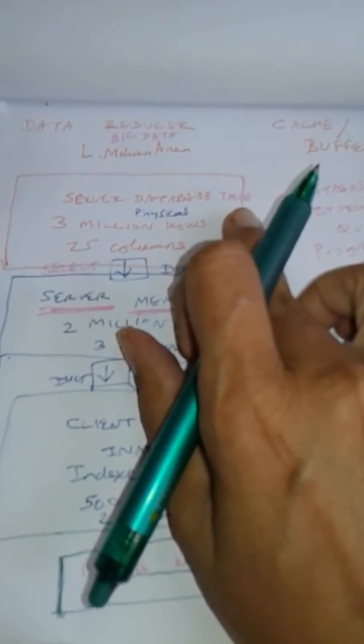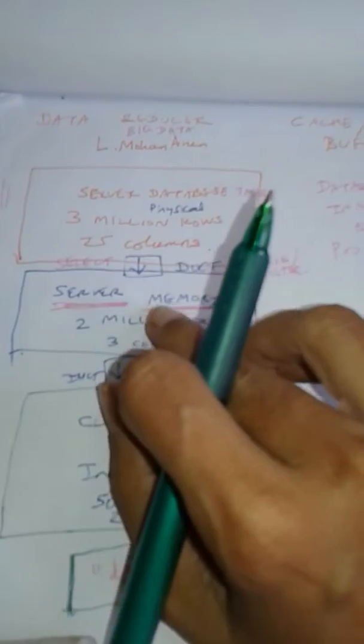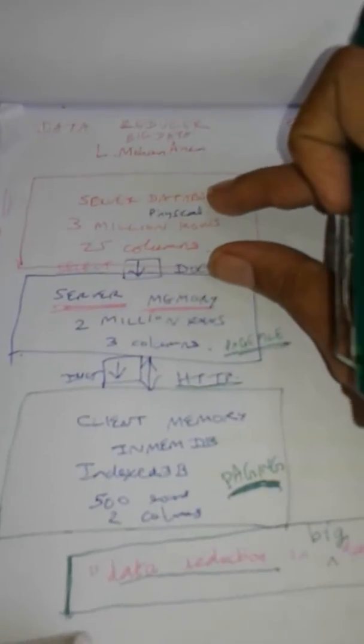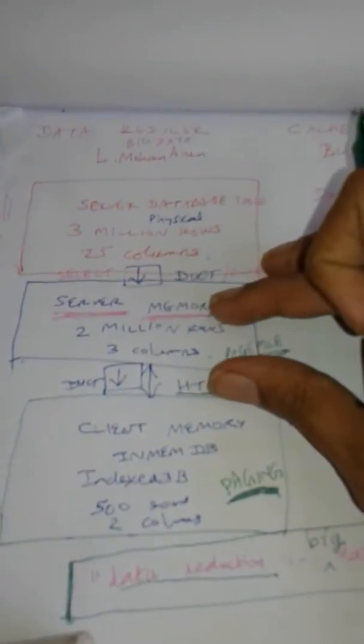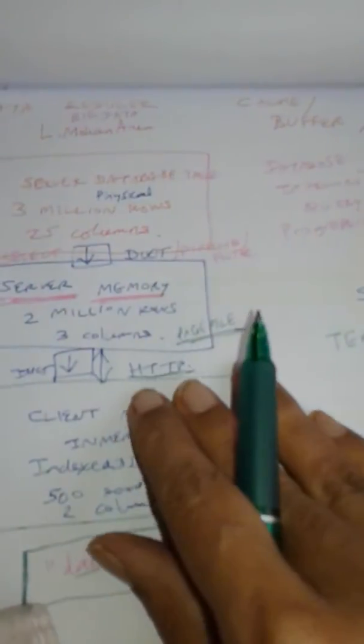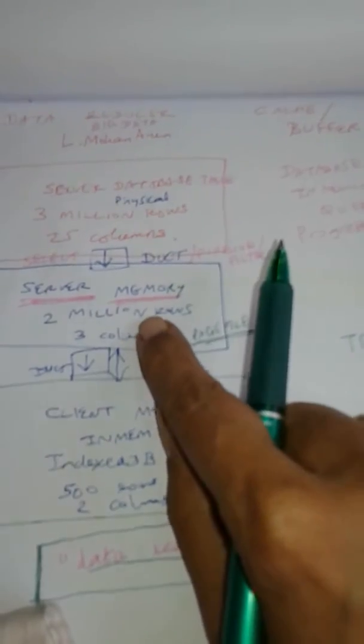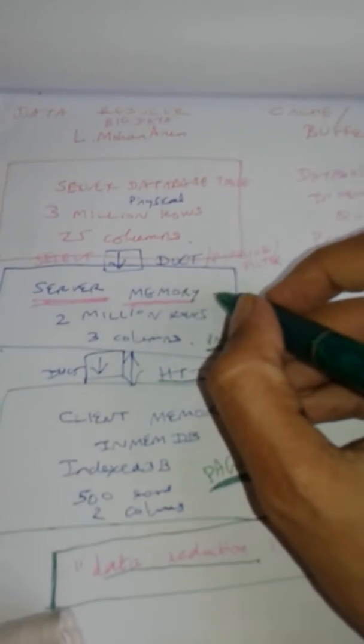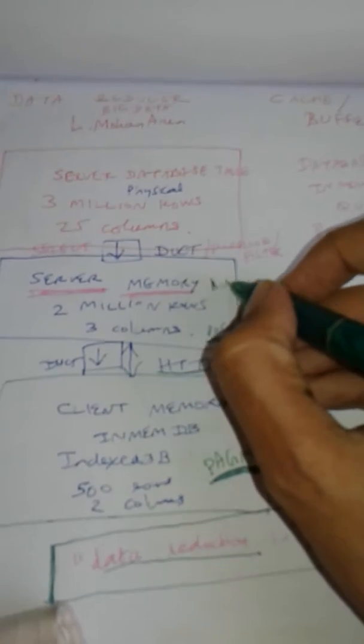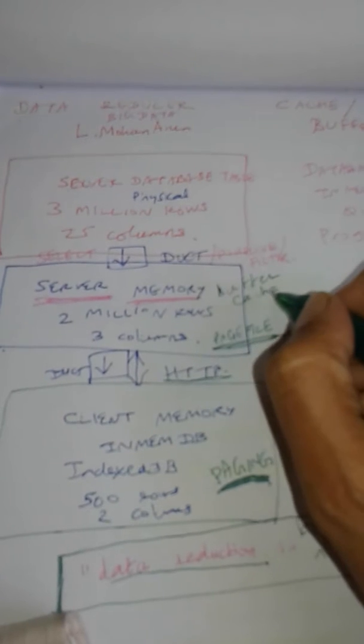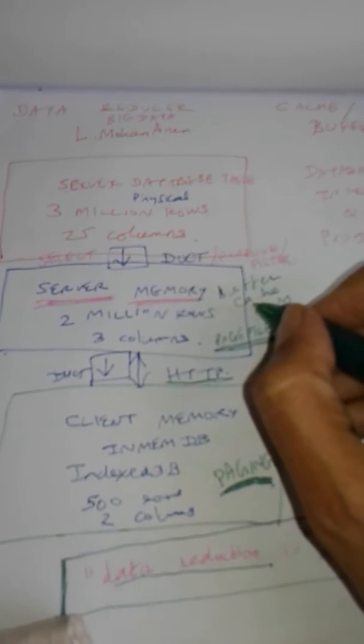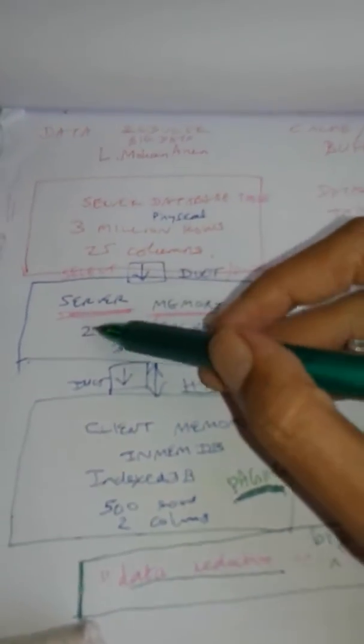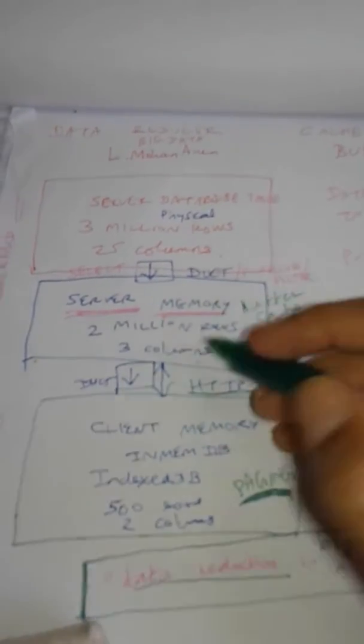This is a database server table. There are 3 million rows and 25 columns. Using a select statement, we are narrowing down this huge record set into 2 million rows and 3 columns, but it is still in the server. When in server, it could be in memory or on the disk. If it is on the disk, it is called page file. If it is in memory, it could be in a buffer or cache, but in most cases it's in RAM—random access memory. From 3 million rows and 25 columns, we have narrowed down to 2 million rows and 3 columns, but this whole thing cannot be transferred over the wire.